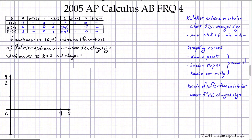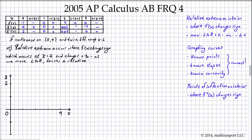It changes from plus to minus as we move left to right, and hence it's a relative max. That's all we have to say. Part B, as indicated earlier, is the graph.